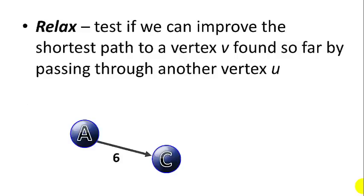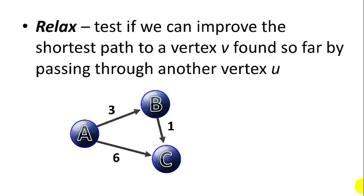Let me illustrate this. If we have a path from A to C with a distance of 6, and then we discover a path from A to B with a distance of 3, and a path from B to C with a distance of 1, we found a shorter path from A to C. So what we're doing is relaxing the edges from A to B and B to C — testing whether we can find a shorter route.